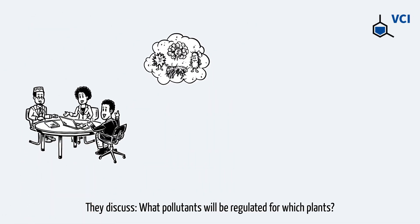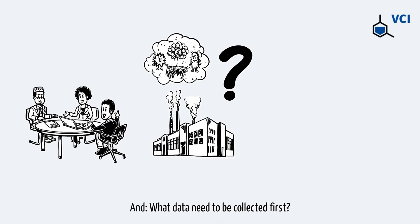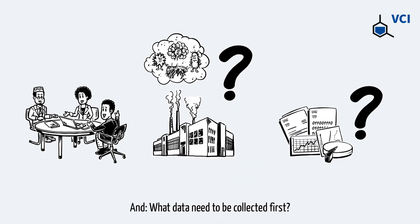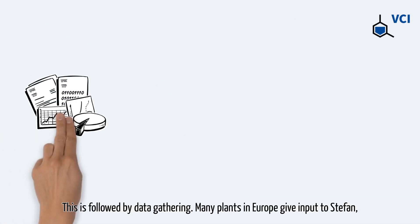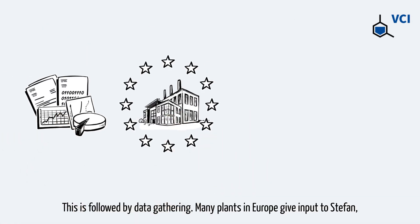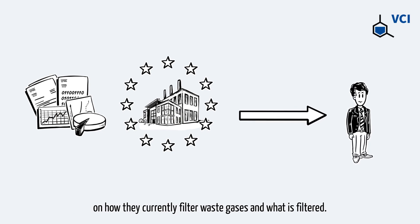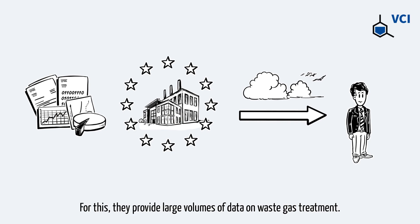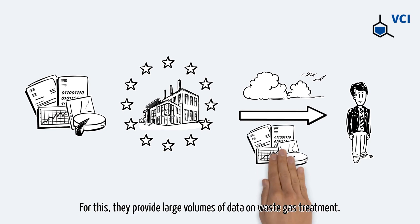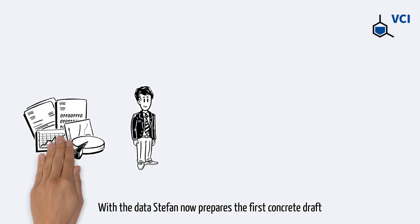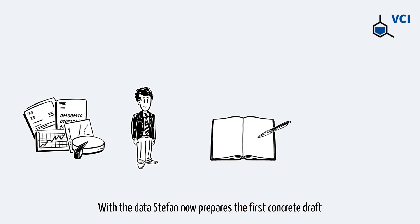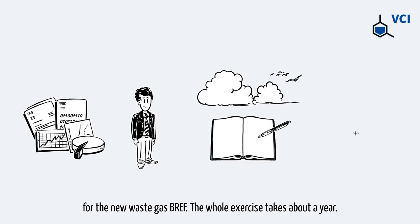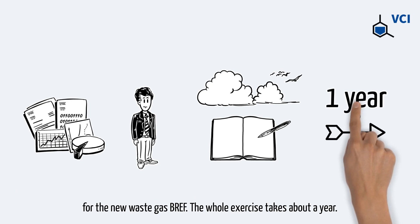They discuss what pollutants will be regulated for which plants and what data need to be collected first. This is followed by data gathering. Many plants in Europe give input to Stefan on how they currently filter waste gases and what is filtered. For this they provide large volumes of data on waste gas treatment. With the data, Stefan now prepares the first concrete draft for the new waste gas BRAF. The whole exercise takes about a year.